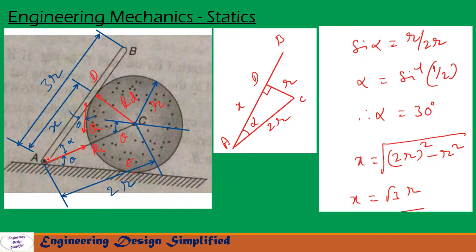Now we form triangle ADC. Let us call this angle alpha, the string length 2R, and this length X. From the right angle triangle ADC, with angle at D equal to 90 degrees, we can write sin alpha = R / 2R, giving alpha = 30 degrees. From the same triangle, X = √(2R² − R²), so X = √3 · R.